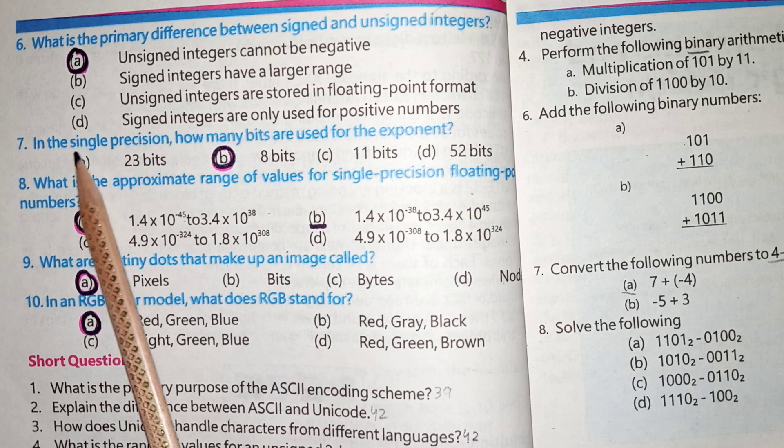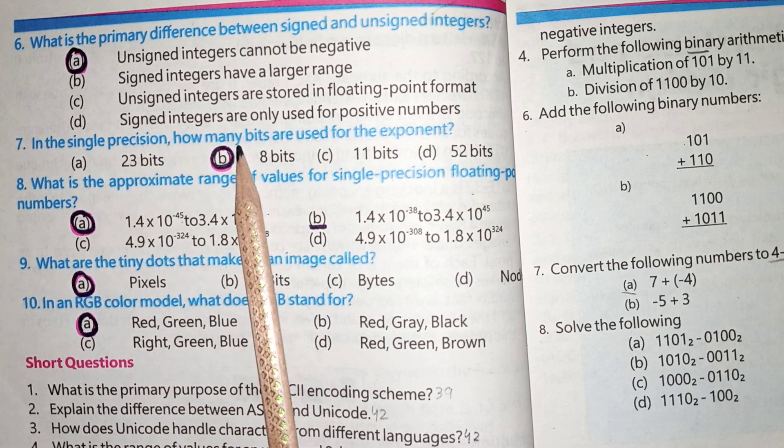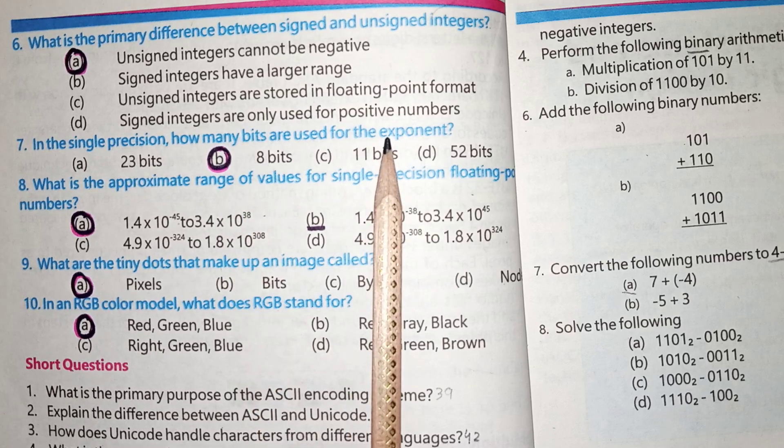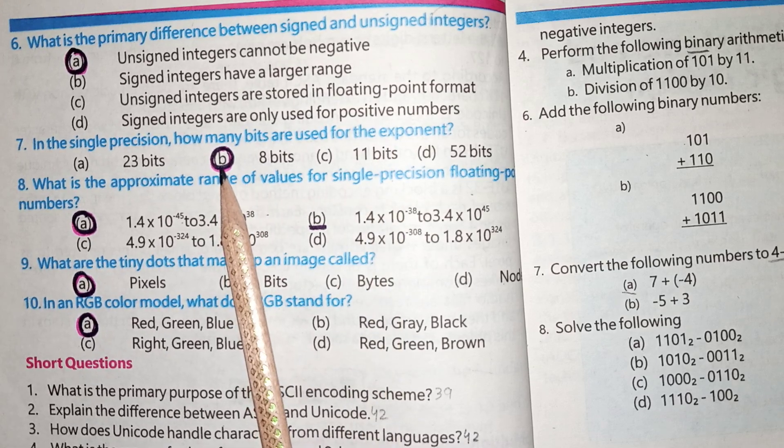MCQs No. 7 is, In the single precision, how many bits are used for the exponents? 8 bits are used for the exponents, B is the correct option.